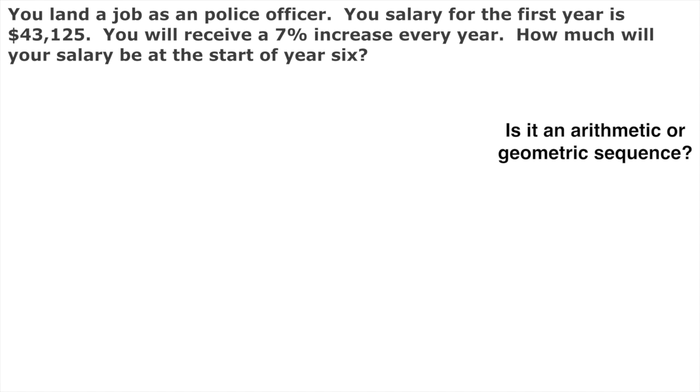The very first thing we need to do is determine if this is a geometric or an arithmetic sequence. An arithmetic sequence means we're adding to the previous amount every year. If we have the same amount that we're adding, the exact same dollar amount—for instance, if it was increasing by $1,200 every year—that would be an arithmetic sequence.